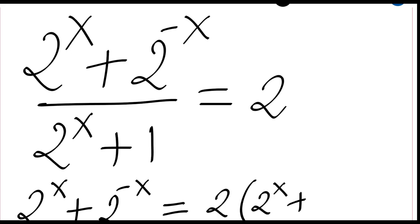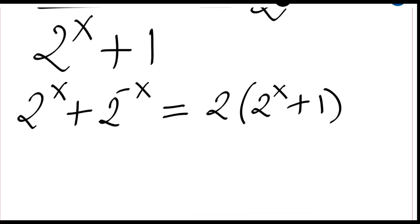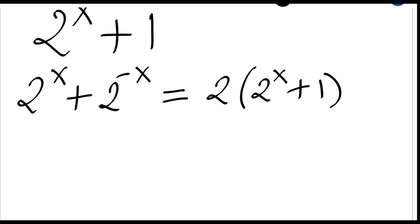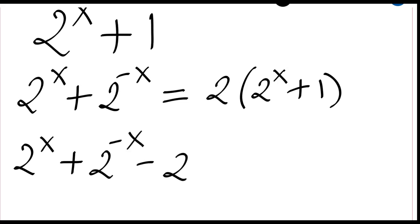Okay, this is our equation now. So let's just rewrite this as 2 to the power x plus 2 to the power minus x minus two times 2 to the power x minus two equal to zero.